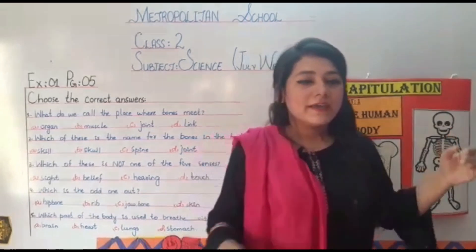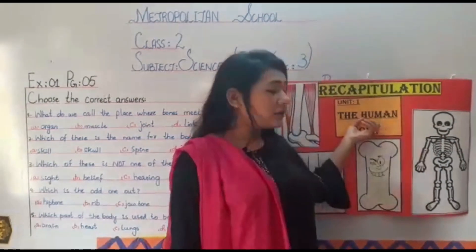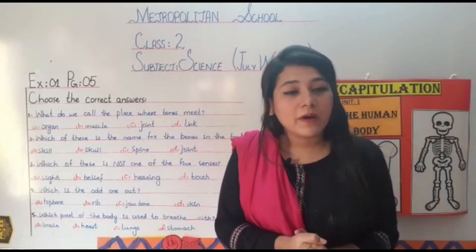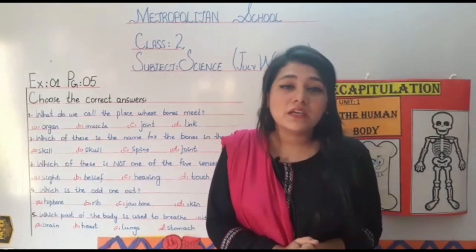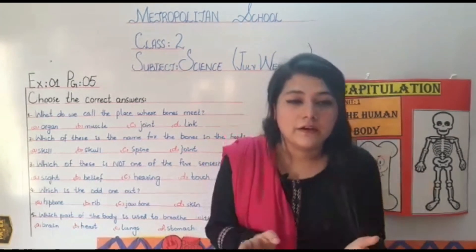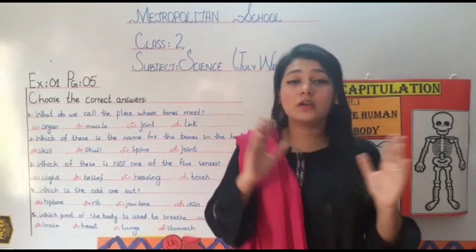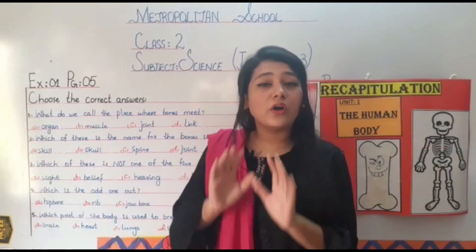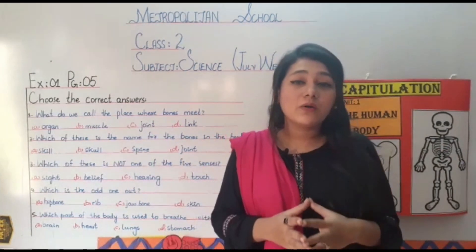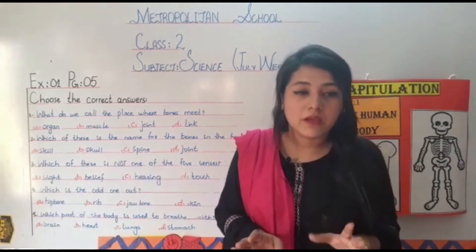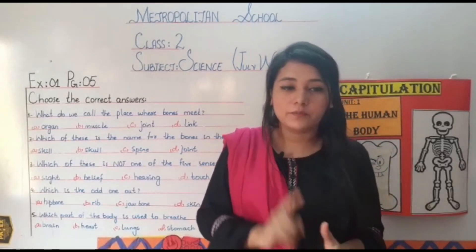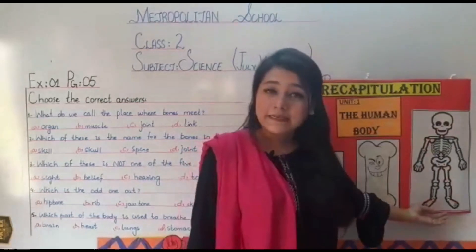In the very first lesson we did unit number one, the human body, in which we learned that the human body is of different shapes, different sizes, and different colors. But when we talk about the internal functions of people all around us, they are all the same. Let me first tell you about the internal framework of the body, which is called our skeleton.